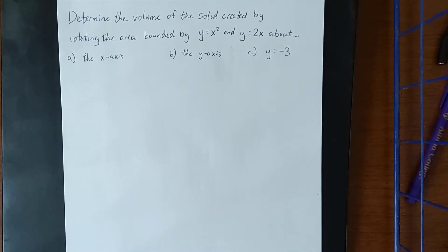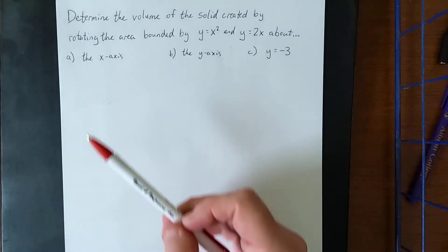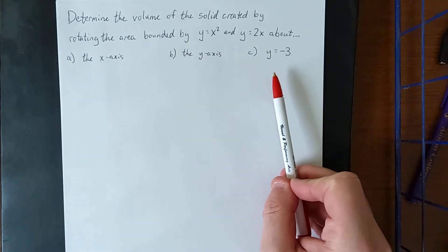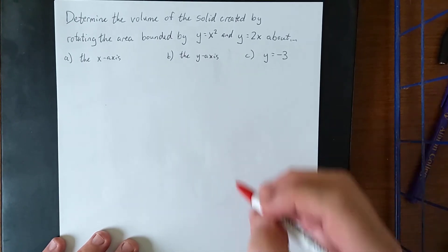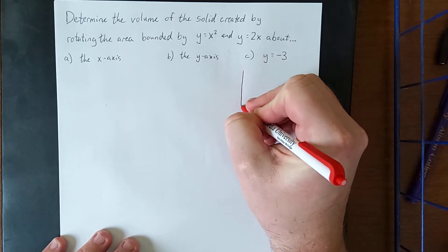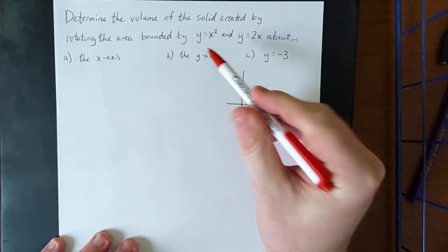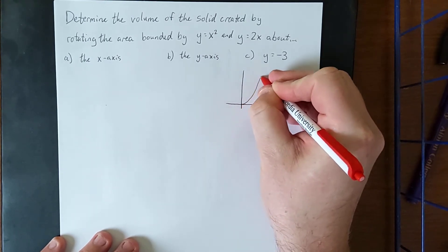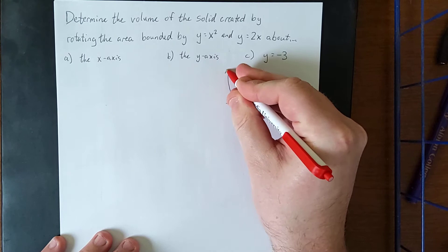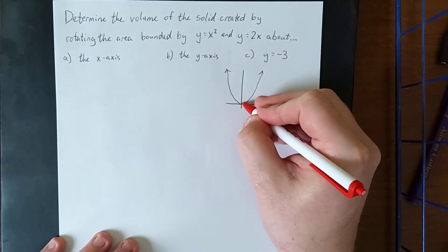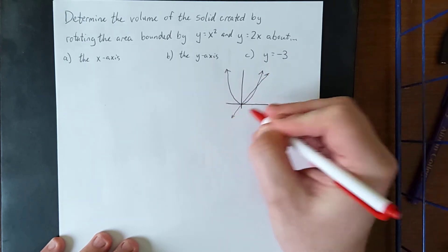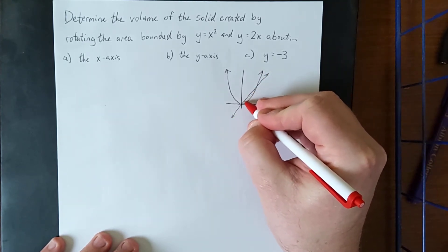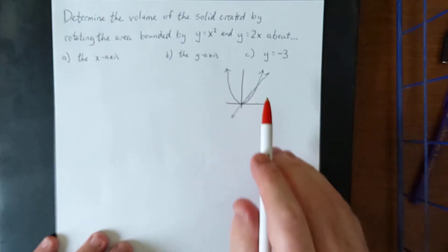In this video we're going to get some exposure to the washer method for volumes of revolution. We'll be determining the volume of the solid created by rotating the area bounded by y equals x squared and y equals 2x about three different axes: the x-axis, the y-axis, and the line y equals negative 3. First, let's sketch the region in question. Y equals x squared is a standard parabola opening upward with vertex at the origin, and y equals 2x is a line of slope 2 passing through the origin. The region is the sliver contained between the parabola and the line.